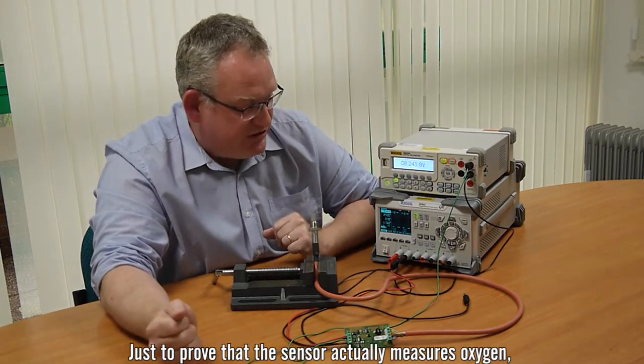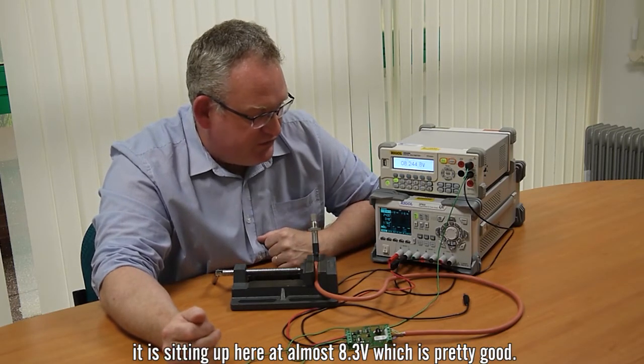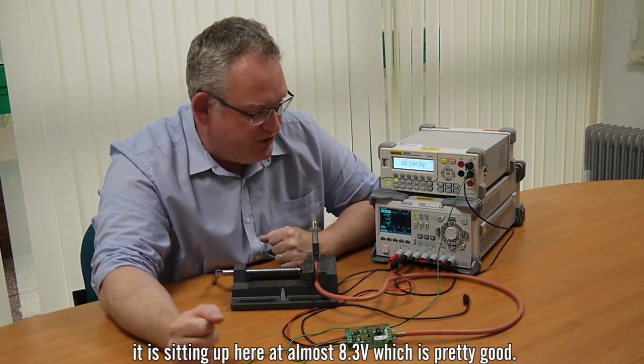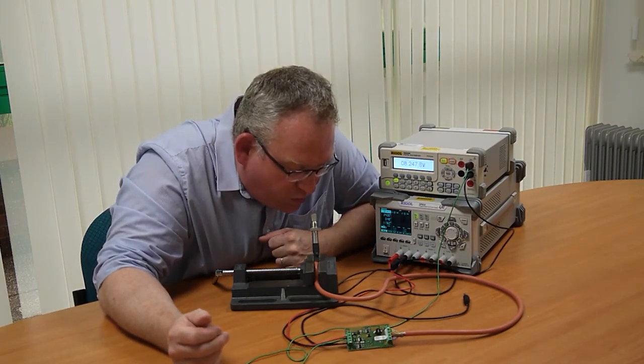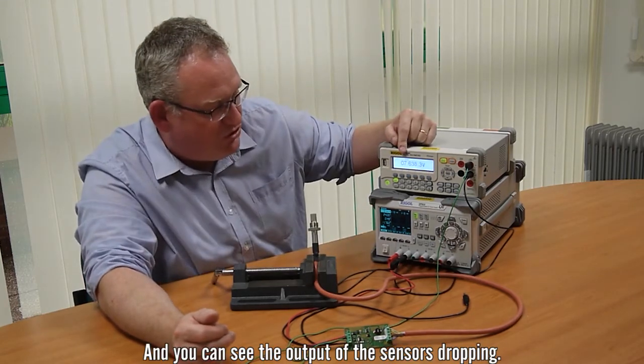Just to prove the sensor actually measures oxygen, it's sitting up here almost at 8.3 volts, 8.2 something volts, which is pretty good. And I'm just going to blow on it. Then you see the output of the sensor dropping.